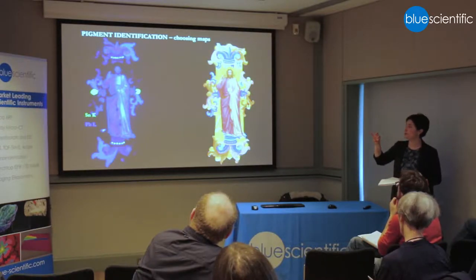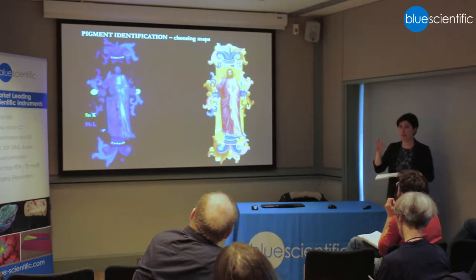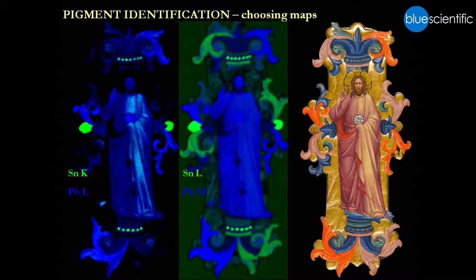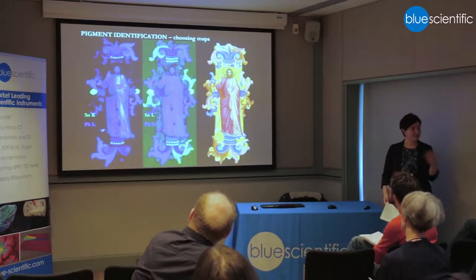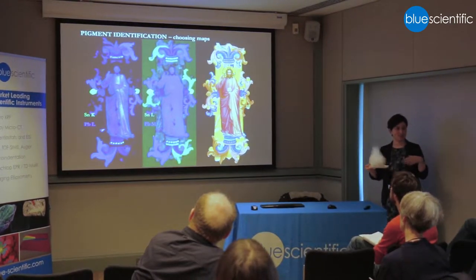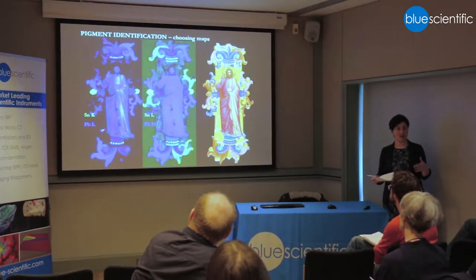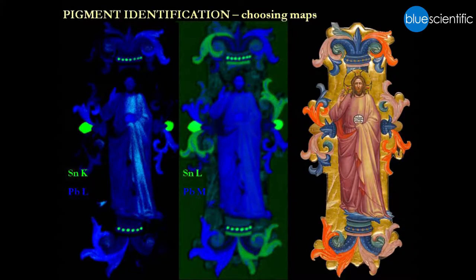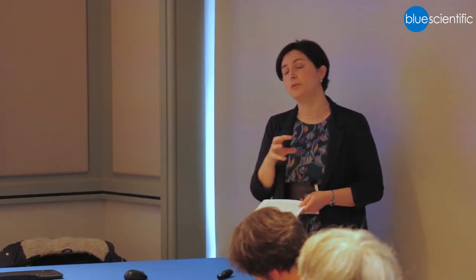What actually helps to distinguish the different pigments is the choice of spectral lines. I chose the tin K and lead L lines, but I could also choose the tin L and lead M lines. That image isn't as good — as has been mentioned already, you have the possibility to choose between different lines for the same element. These are the low-energy lines, and the image is noisier, partly because there is much more overlap between lines related to different elements in the low-energy area.